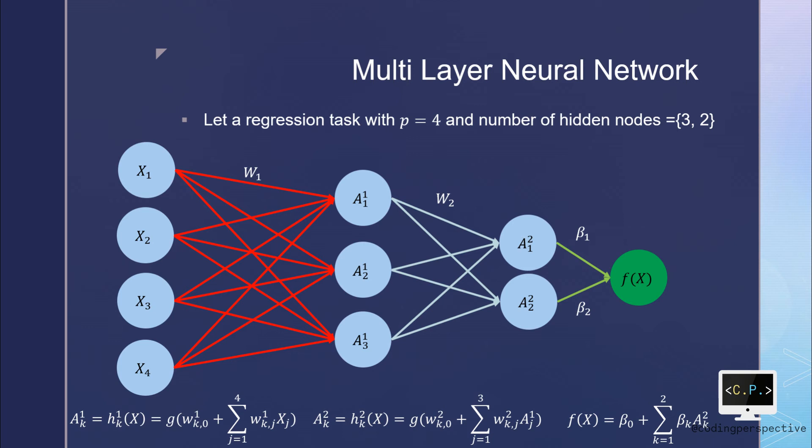Lastly, each a1k is calculated as w1k0 plus w1kj times xj, summed over j's. Note that we have a nonlinear activation function g that is also specified beforehand.